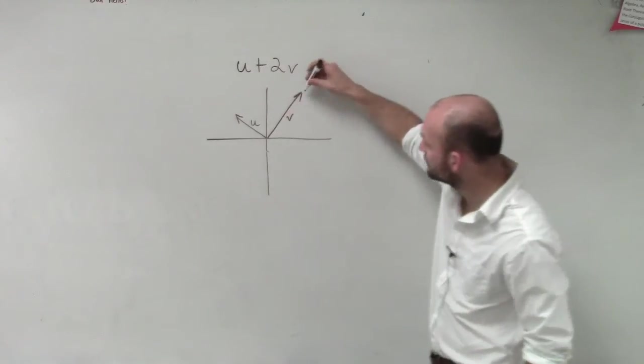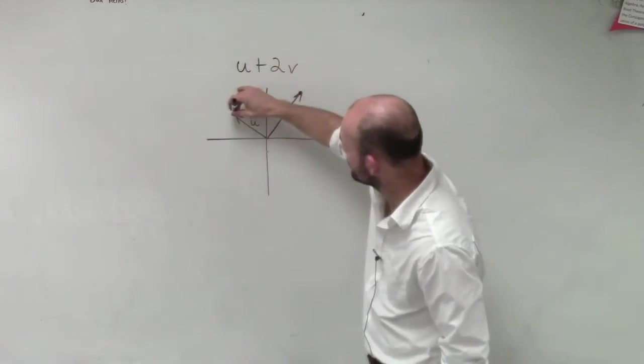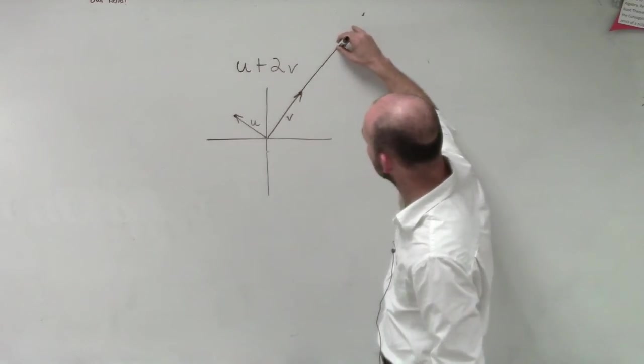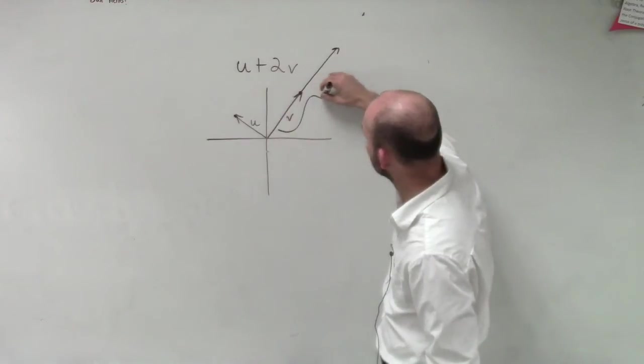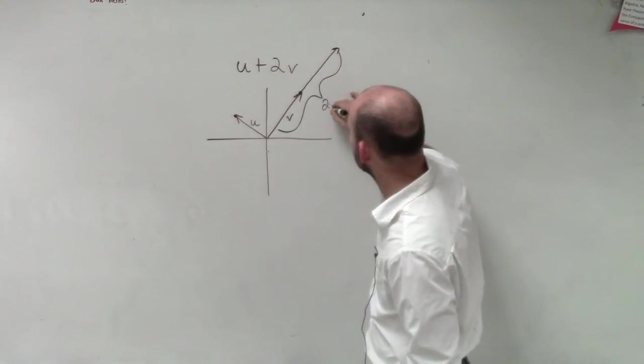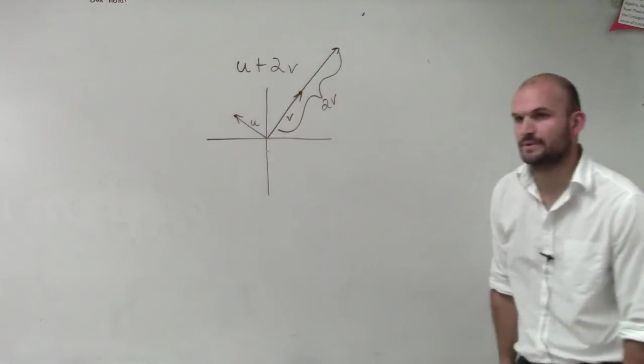meaning we're going to double now our length of v. So if here's v, to find 2v, something like this. Because you're doubling the length of v.